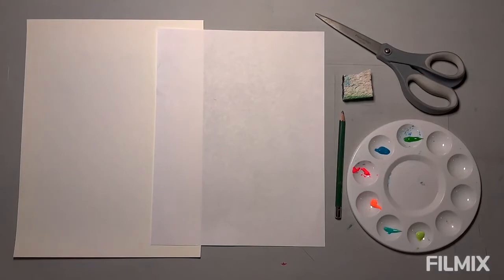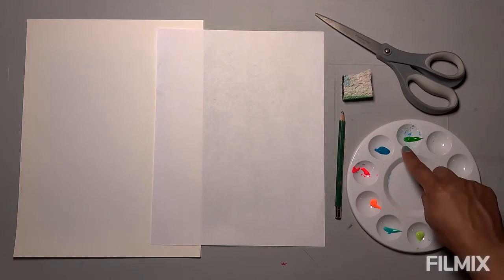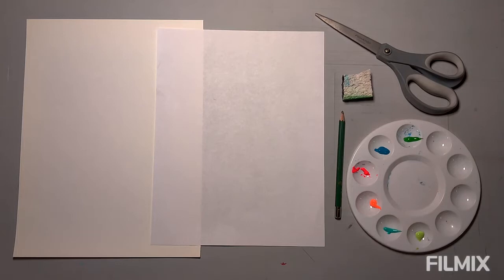You're also going to need your paint palette, and the colors that you're going to be needing are green, turquoise, neon pink, neon orange, aquamarine, and yellow green. You'll also be needing a squared sponge, just one, and some scissors. Let's get started with our art project.